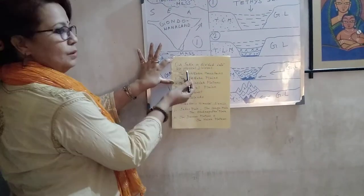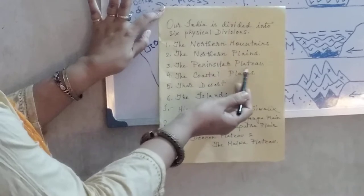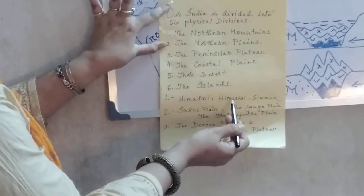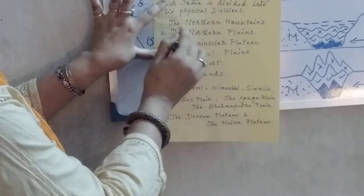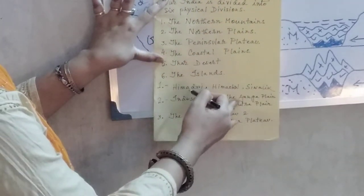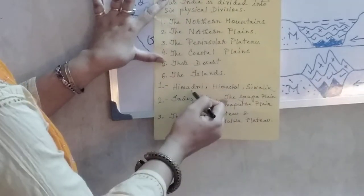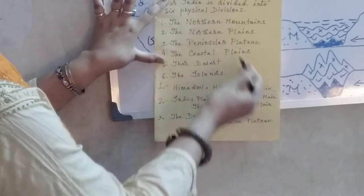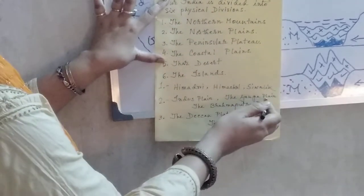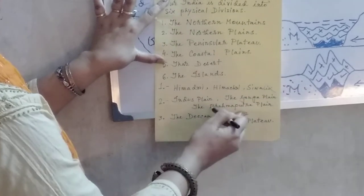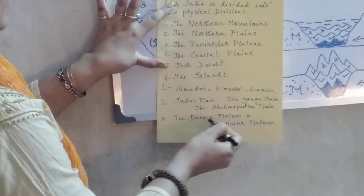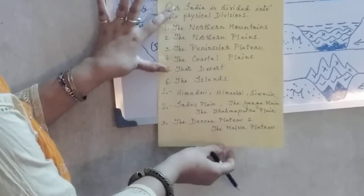India is divided into six physical divisions: the northern mountains, the northern plains, the peninsular plateau, the coastal plains, the desert, and the islands. The northern mountains are subdivided into Himadri (the Greater Himalaya), Himachal (the Lesser Himalaya), and Siwalik. Our northern plains are also subdivided into three parts: the Indus Plain, the Ganga Plain and the Brahmaputra Plain. The Peninsular Plateau is subdivided into two parts: the Deccan Plateau and the Malwa Plateau.